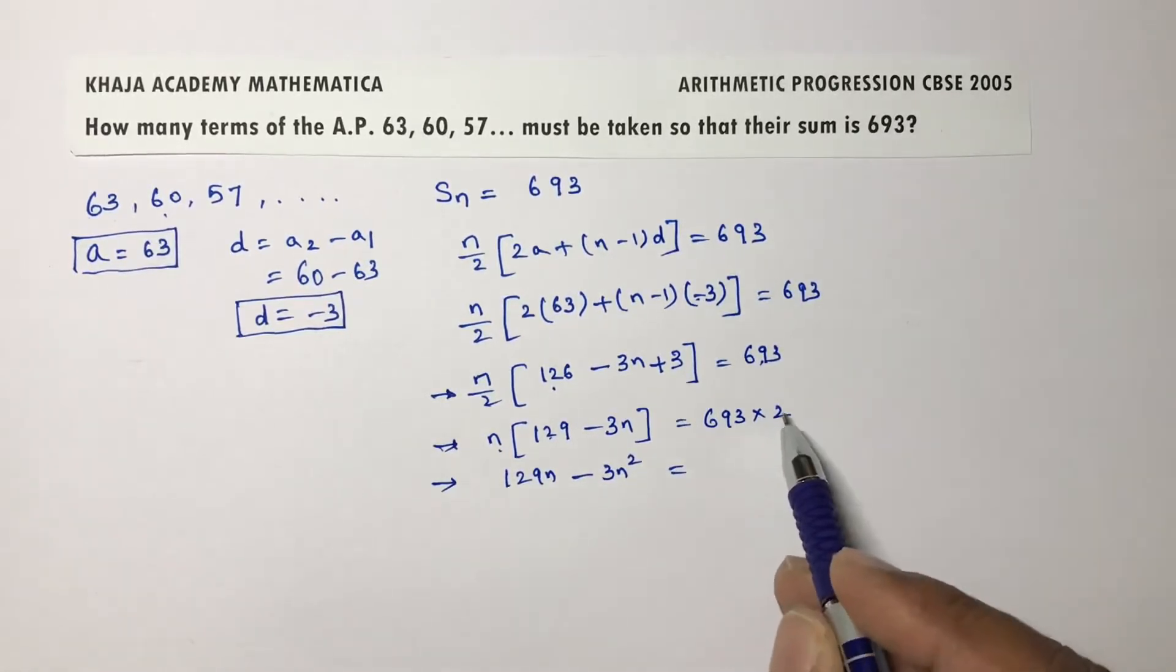n into 129 minus 693 times 2. 693 if you multiply with 2, you will get 1386.